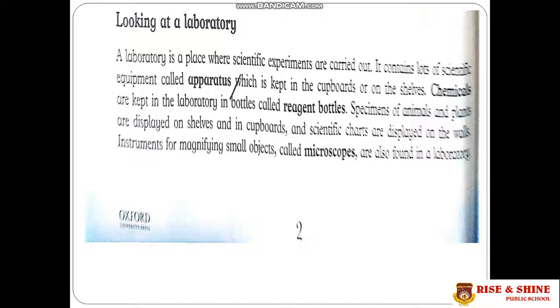Chemicals are kept in the laboratory in bottles called reagent bottles. Specimens of animals and plants are displayed on shelves and in cupboards, and scientific charts are displayed on the walls.